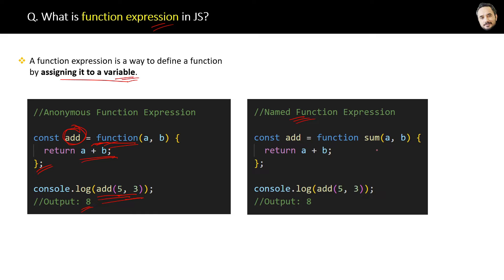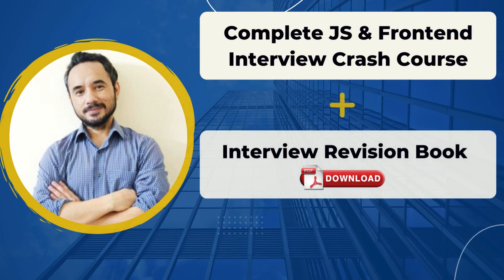Now there is another type of function expression and that is named function expression. Here you can see we have one named function 'sum' and we are assigning this named function to the 'add' variable, then calling the 'add' variable in the same way. But this approach is not giving any benefit because you can directly use the function name 'sum' to call it. So mostly function expressions are used with anonymous functions only.